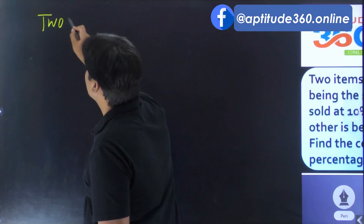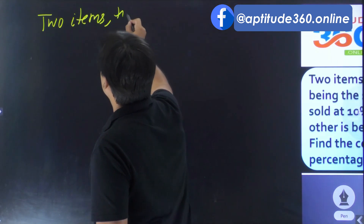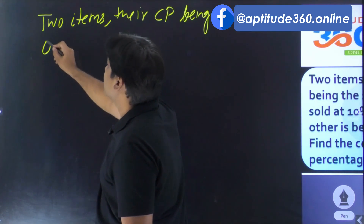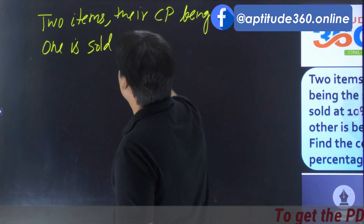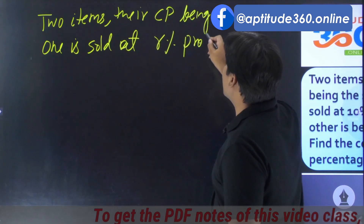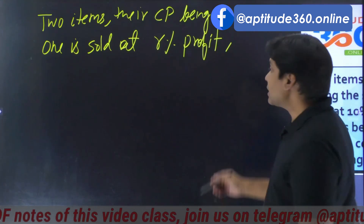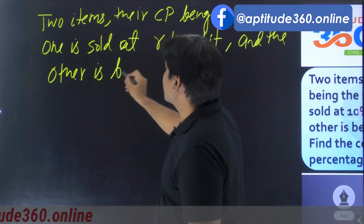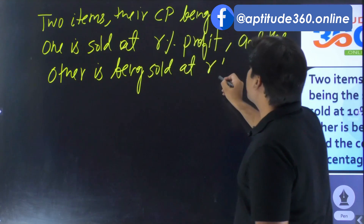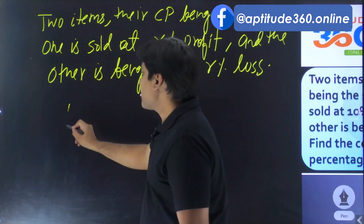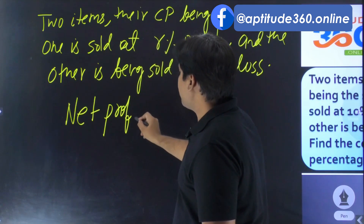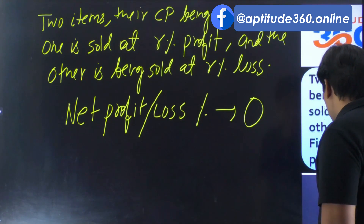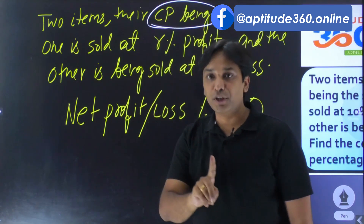Let me generalize the entire problem. Two items with their cost prices being the same: one is sold at r% profit and the other is sold at r% loss. In this situation, the net profit or loss percentage is going to be nothing but zero. This is because these two items have the same cost price — that is the keyword.